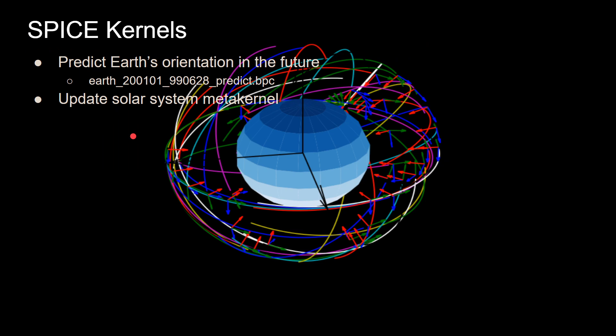There's an update on SPICE kernels: you need one more kernel to predict Earth's orientation in the future. JPL provides SPICE kernels and posts new high-precision kernels twice a week for near-term accuracy. They also have kernels that predict Earth's orientation for a very long time — the one I use covers roughly 100 years. You can use the higher-frequency one if you want to update it more often, and they also have high-precision historical data.